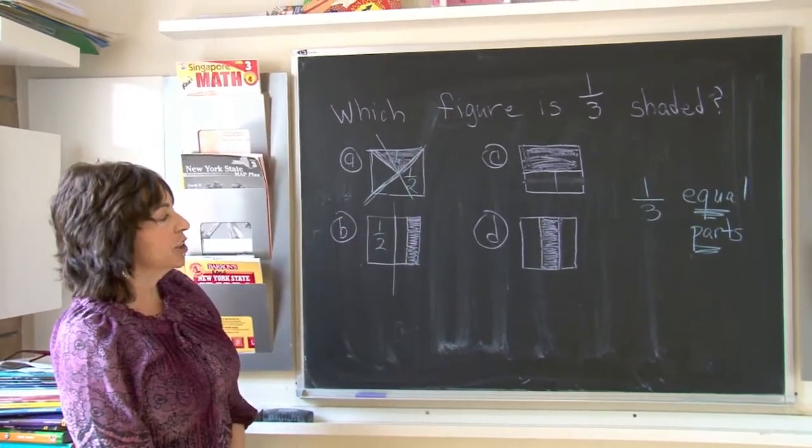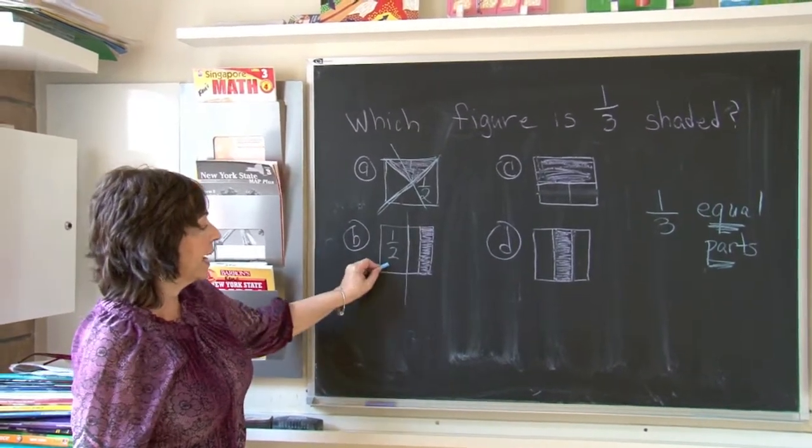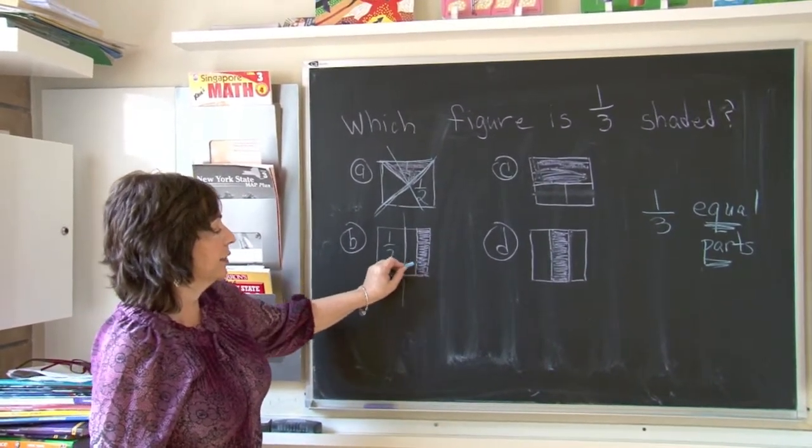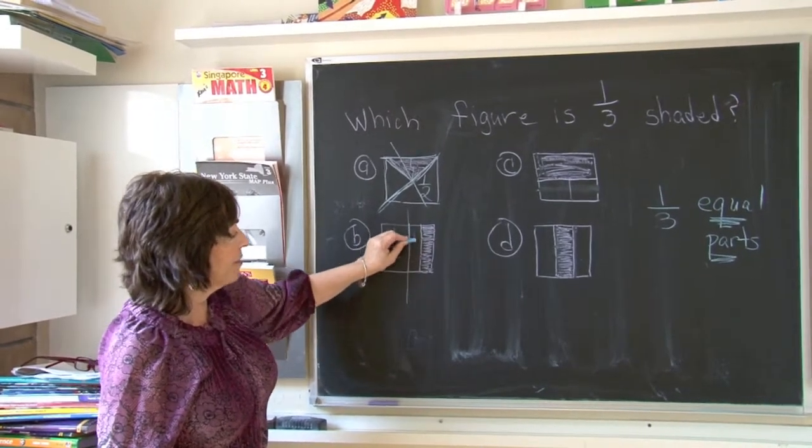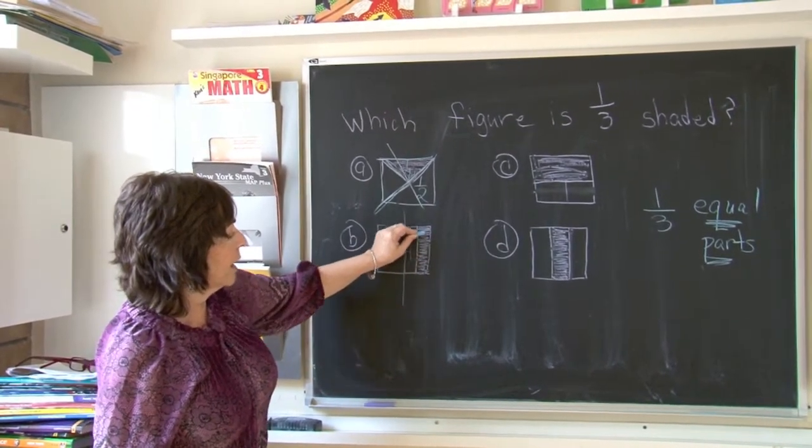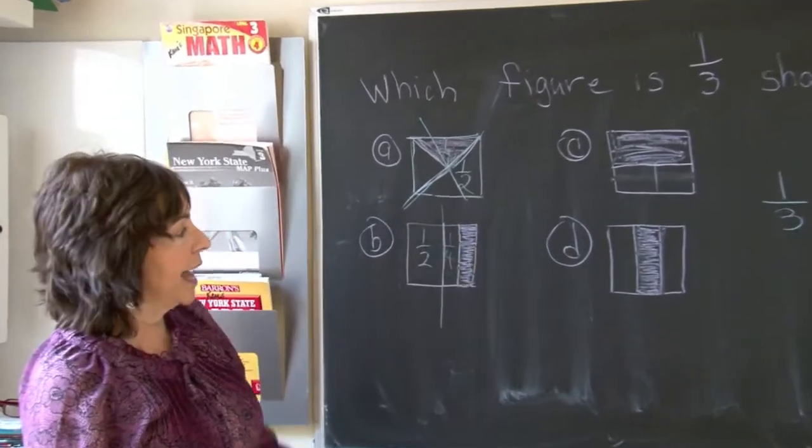It does not give us three equal parts. One-half is greater than these two parts. Together, this is one-half. So half of it is one-fourth and one-fourth. That is not equal.